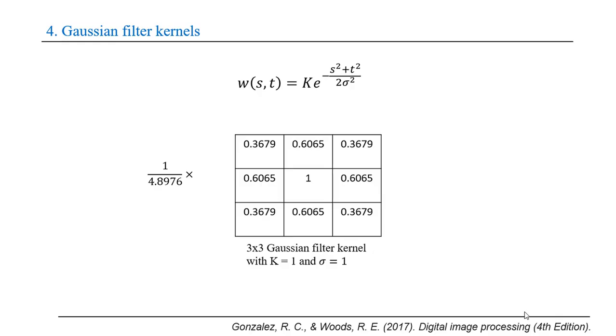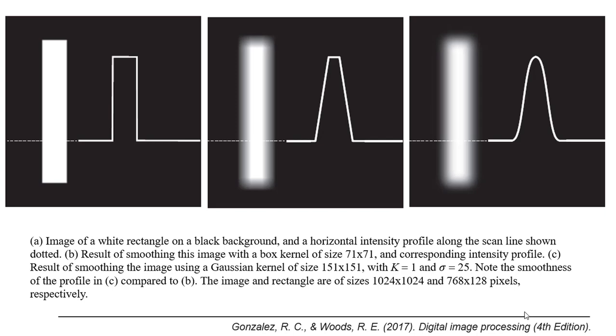The other kernel is Gaussian, which has the following equation. This figure shows the difference between applying a box filter and a Gaussian filter. We notice that the result of applying Gaussian is smoother around the edges than the result of the box filter.